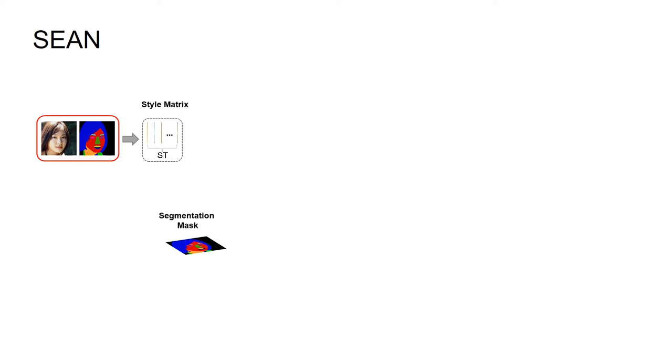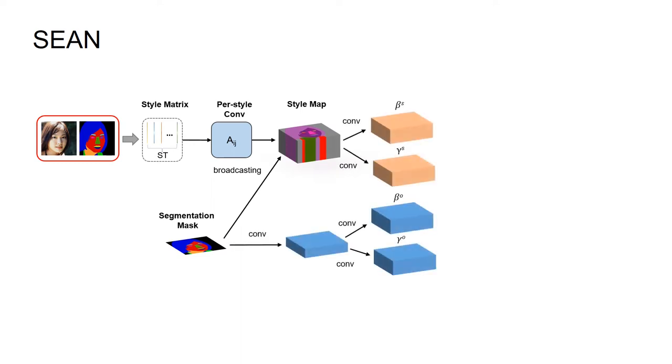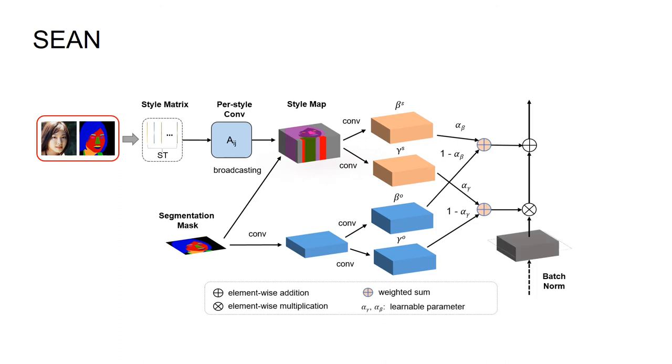In more detail, the style code matrix ST undergoes a per-style convolution and the style codes are then broadcast to their corresponding regions according to M to yield a style map. Both the style map and segmentation mask will be passed through separate convolutional layers to generate the modulation parameters.